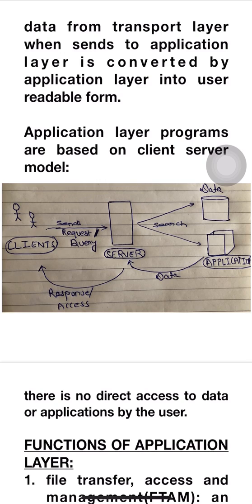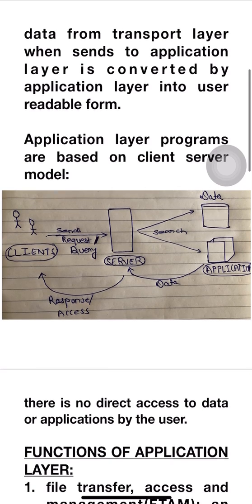For example, if data is requested, then the server replies by sending it. And if the client has asked to access some application, then the server performs an authentication check. If the client is authenticated to use that application, then access is granted. As we can see, there is no direct access to data or application by the client.